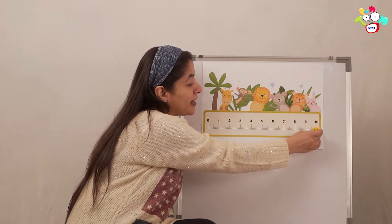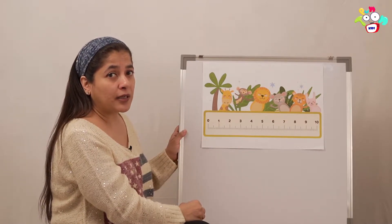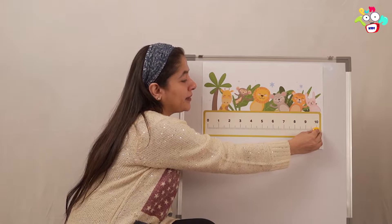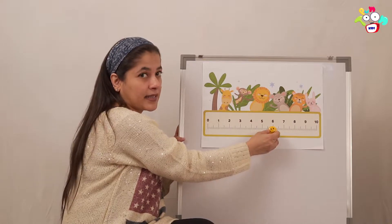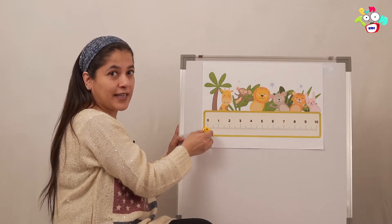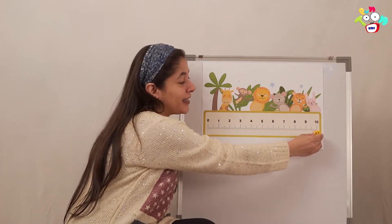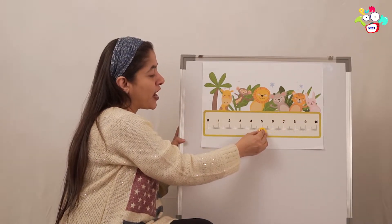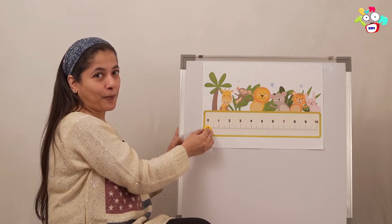Do you all remember the other time when we learned descending order and did backward counting? Yes, we did backward counting. So now let's count backward: 10, 9, 8, 7, 6, 5, 4, 3, 2, 1, 0. Let's do this once more: 10, 9, 8, 7, 6, 5, 4, 3, 2, 1, and 0.